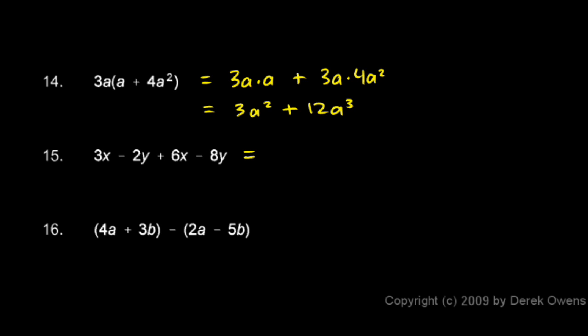Let's combine the terms. 3x and 6x combine to give us 9x, and then the negative 2y and the negative 8y combine to give us a negative 10y. So 9x minus 10y is the answer.